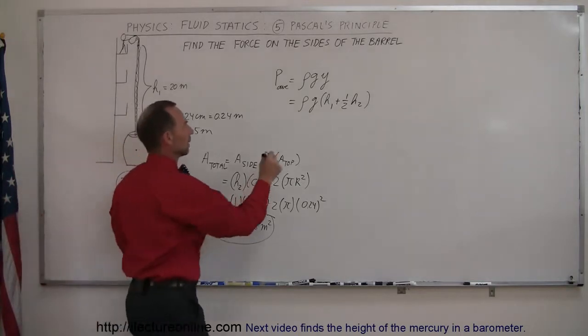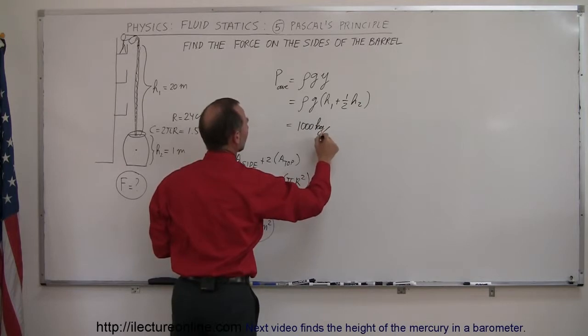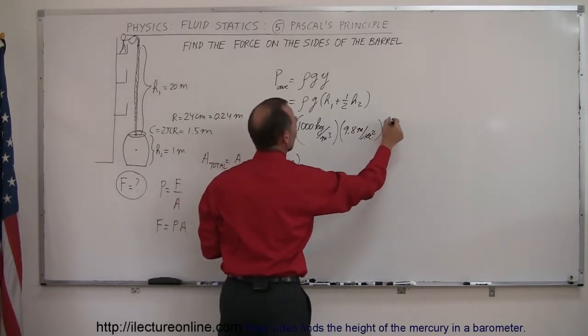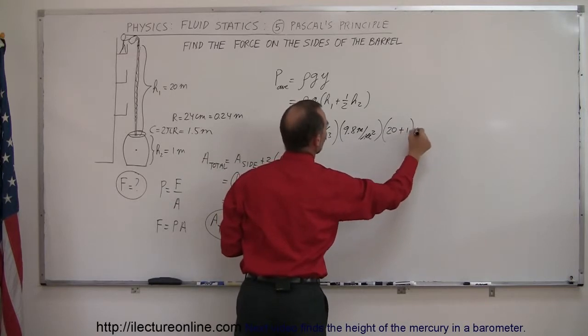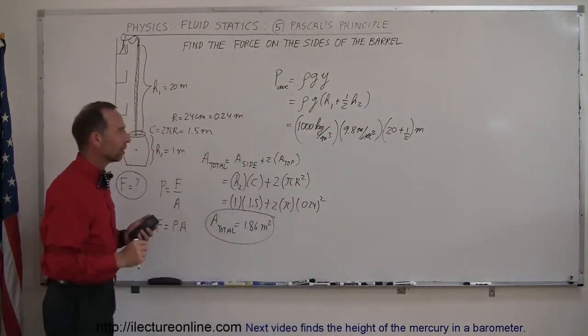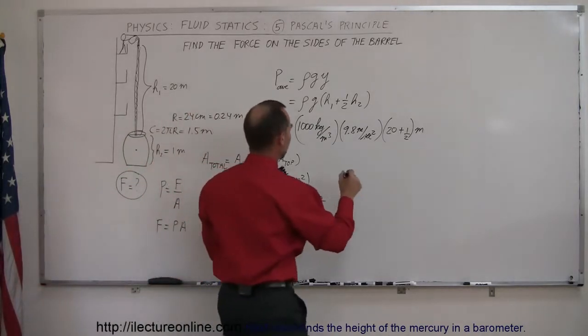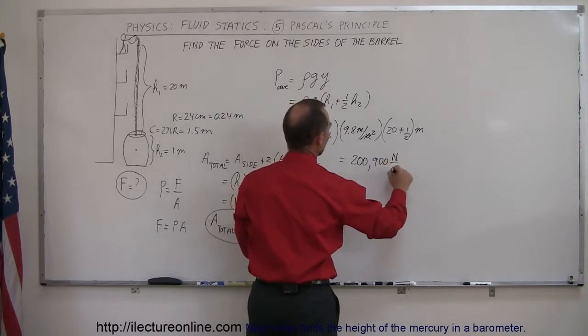The pressure here would be ρ, which is 1000 kilograms per cubic meter, times 9.8 meters per second squared, which is acceleration due to gravity, times 20.5 meters. That would be a pressure of 200,900 newtons per square meter, or pascals.